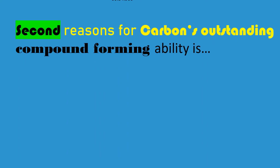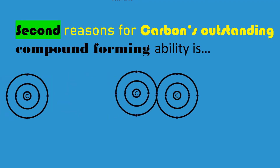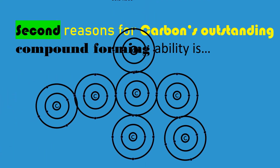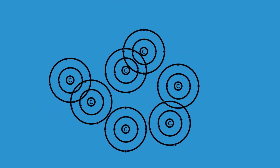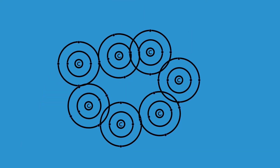The second reason for carbon's astounding compound-forming ability is that carbon atoms can bind to each other not only in straight chains, but in complex branchings, like the branches of a tree. They can even join head-to-tail to make rings of carbon atoms. There is practically no limit to the number or complexity of the branches or the number of rings that can be attached to them, and hence no limit to the number of different molecules that can be formed.